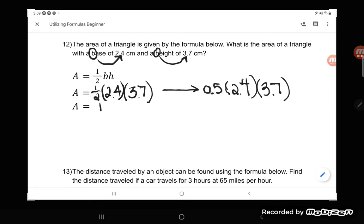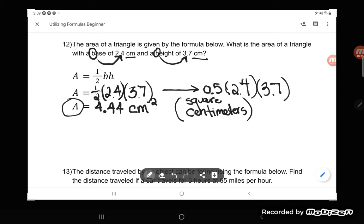And I get 4.44. And 4.44 what? Well, again, my problem was in centimeters, but I'm looking at area here and area is always measured in square units. And so my answer is not going to be in regular centimeters. It's going to be in square centimeters, which I abbreviate by putting a little floating two. And by the way, that's not math to do. It's just an abbreviation for square centimeters. And so there is my answer for that one. 4.44 square centimeters. Let's go on to the last one.